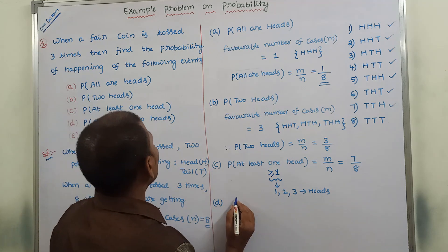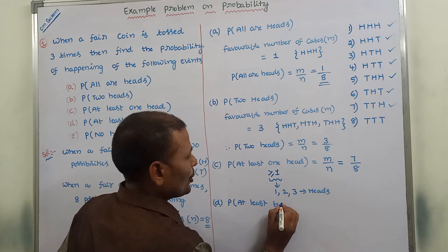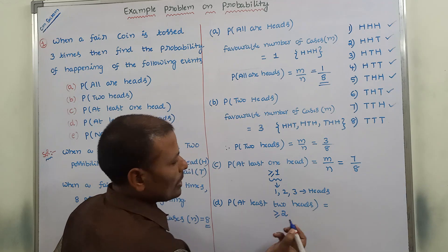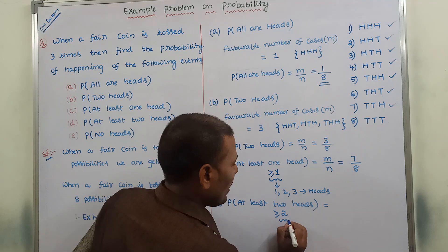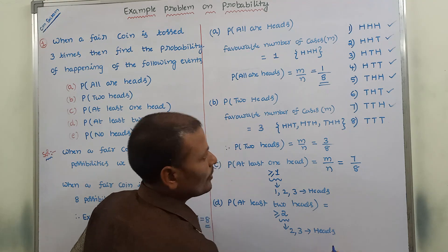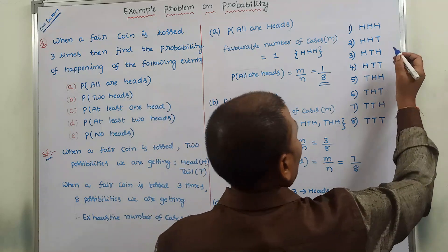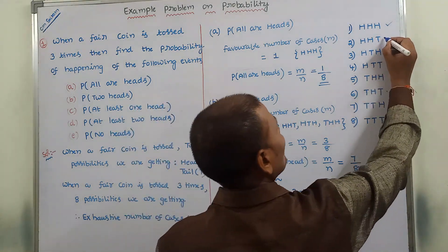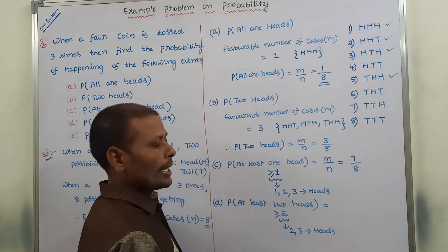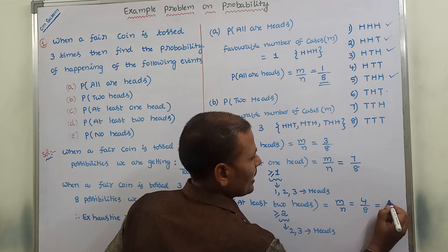Next, probability of getting at least two heads. At least two heads means greater than or equal to two heads — that is, we consider two heads and three heads cases. Among the eight possibilities, one has three heads and three have two heads. So favorable number of cases M is four and exhaustive number of cases N is eight. Therefore probability of at least two heads equals four by eight, that is one by two.